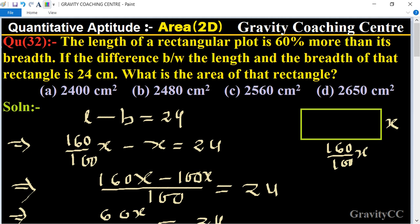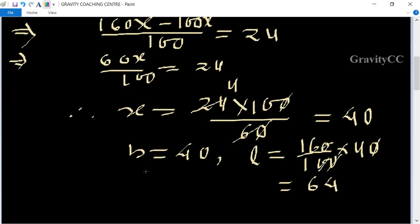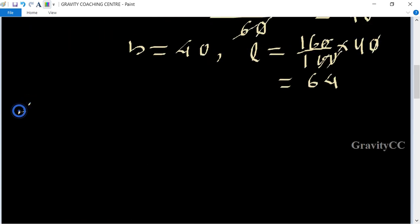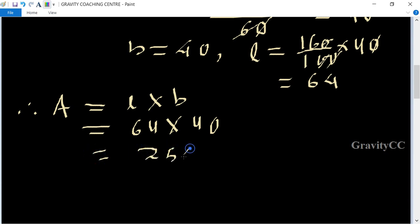What is the area of that rectangle? Therefore, area of the rectangle plot is length into breadth, equal to 64 multiply 40, equal to 2560 centimeter square, which is the required answer.